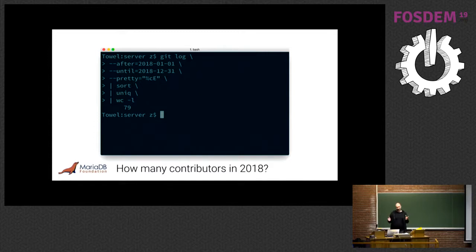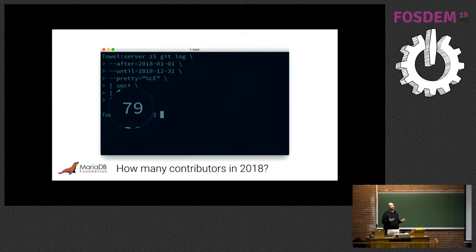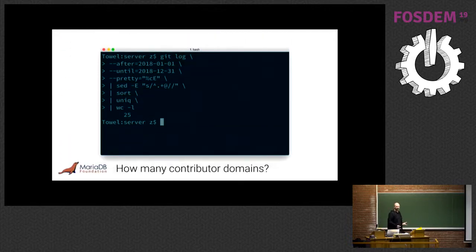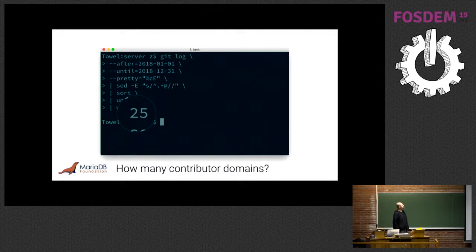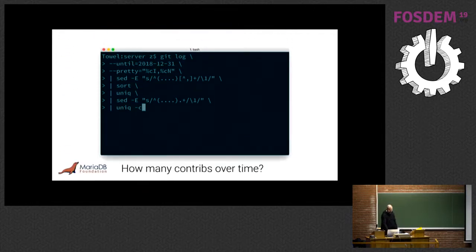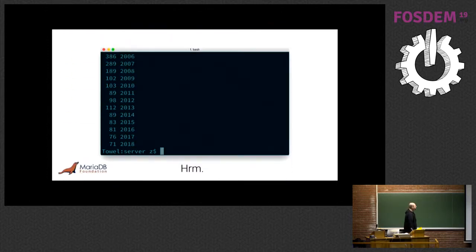So I used simpler tools. I asked Git: in the last year, how many unique email addresses were there for committers? 79. That's okay — there are roughly 20-some engineers at the MariaDB Corporation and say 5 to 10 at the MariaDB Foundation, but that doesn't seem like a lot. How many contributor domains? 25 unique domains — that doesn't feel like a lot. And historically, looking at contributor counts over time, at the highest point in 2006 there were 386 contributors, and it's dwindled down over time.